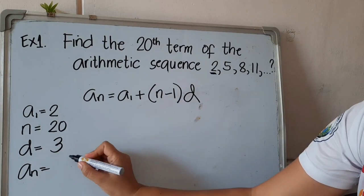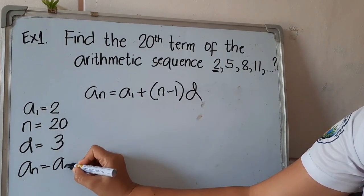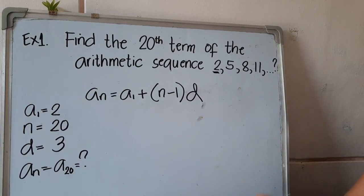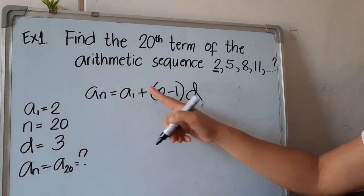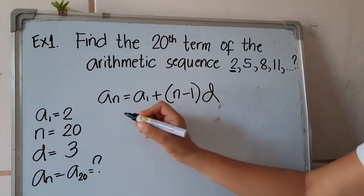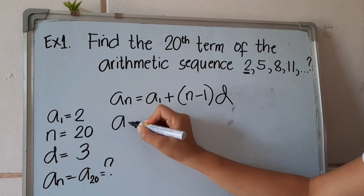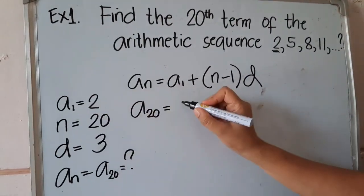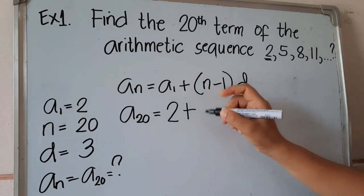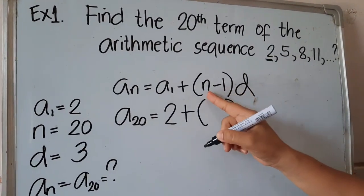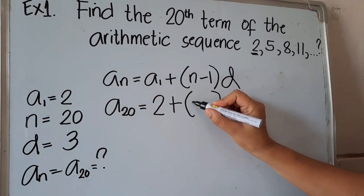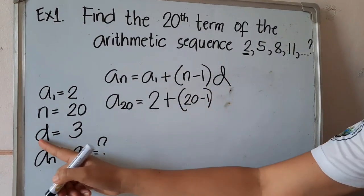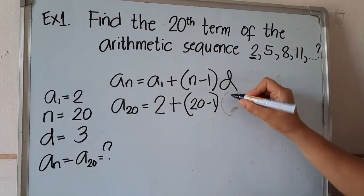Our a_n refers to the last term, but in this problem we are going to find the last term, so a_20 is unknown. Now, using our given values, the first step is to substitute everything into the formula: a_20 = 2 + (20 - 1) × 3.